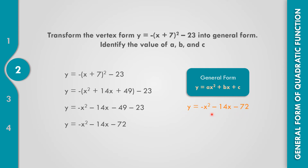Now identify the values of a, b, and c. The value of a, the numerical coefficient of x squared, is negative 1. The value of b, the numerical coefficient of x, is negative 14. And our constant, the value of c, is negative 72. So a equals negative 1, b equals negative 14, and c equals negative 72.